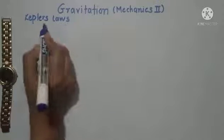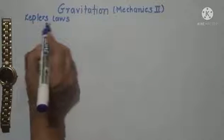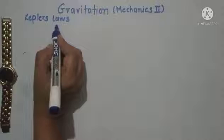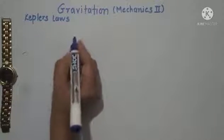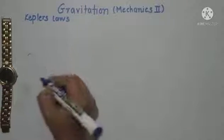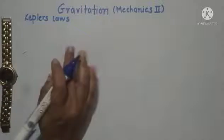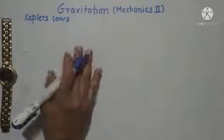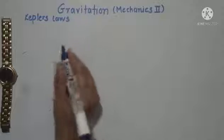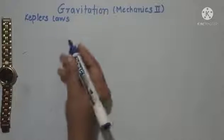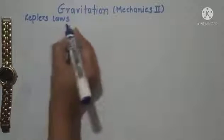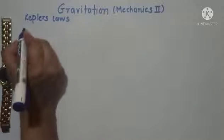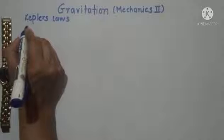Kepler was the first scientist who gave laws regarding planetary motion — how planets revolve around the Sun, what is the period, and what is the area swept by the radius vector. He gives three laws.